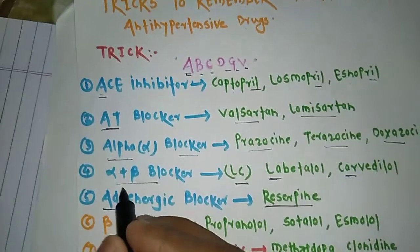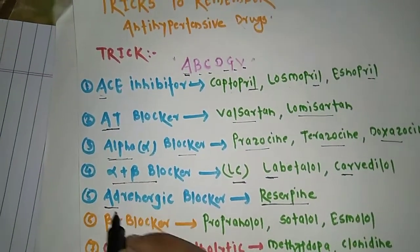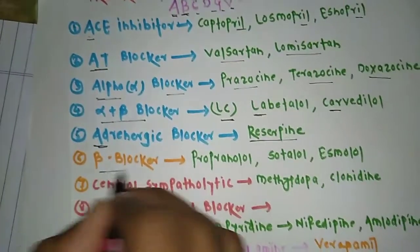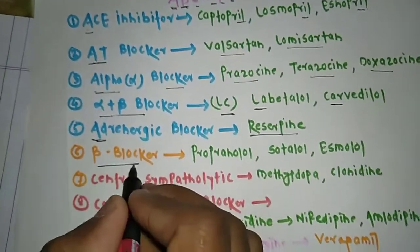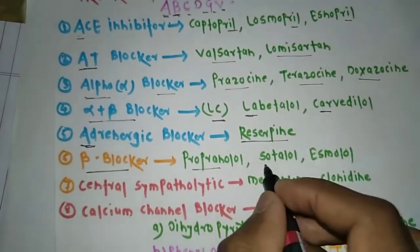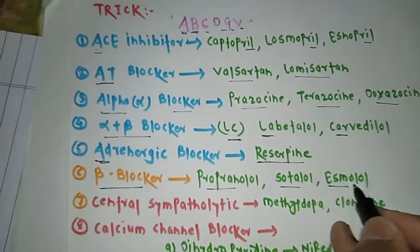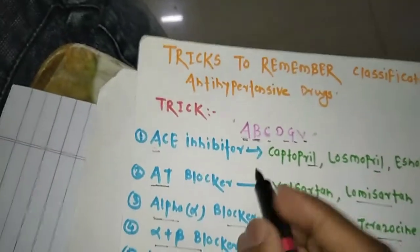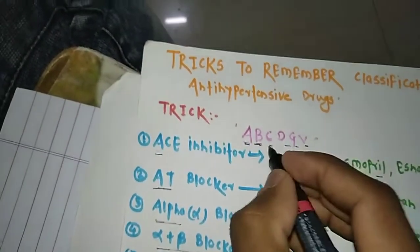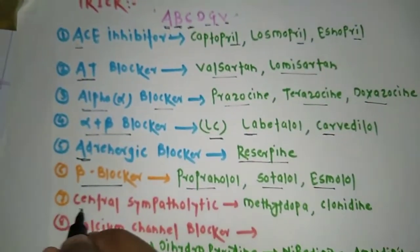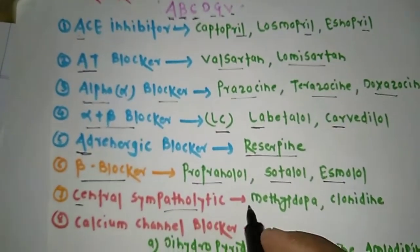We have completed all the A categories: ACE inhibitor, AT blocker, Alpha blocker, Alpha plus Beta blocker, and Adrenergic blocker. Moving to B — B stands for Beta blocker. Examples of beta blockers are propranolol, atenolol, and metoprolol.